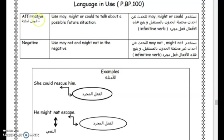As you can see, for affirmative modals we have may, might, or could — to talk about possible future situations. Pay attention that verbs after may, might, or could should be infinitive verbs.